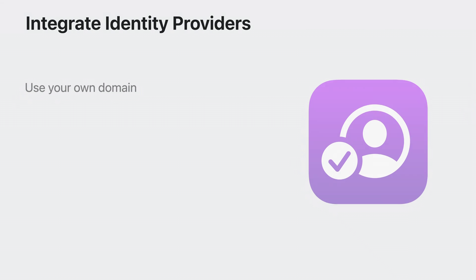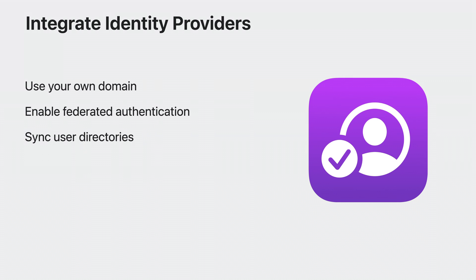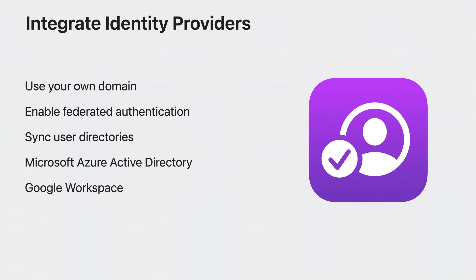You can create managed Apple IDs yourself through Apple Business Manager or Apple School Manager, but you can also use identity providers to help you create them. When you have an identity provider, you can use your own domain so that your managed Apple ID looks like your organization email ID, enable federated authentication which allows your users to sign in with the same credentials they use in your organization, and sync your user directory to automatically get updates when changes happen to your managed Apple IDs. Apple Business Manager and Apple School Manager first added federated authentication for Microsoft Azure Active Directory, and last year we added support for Google Workspace. Today, thousands of organizations use these identity providers to automatically create managed Apple IDs and keep their accounts synchronized.